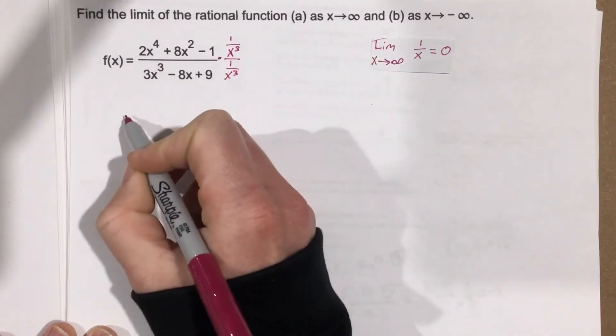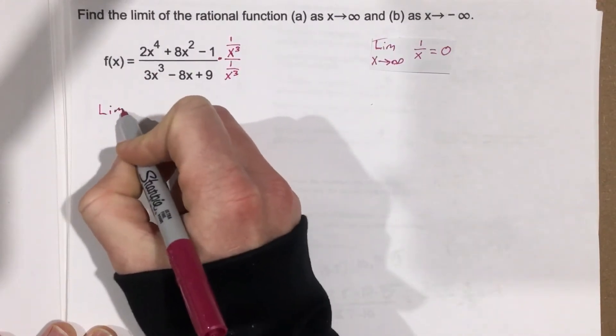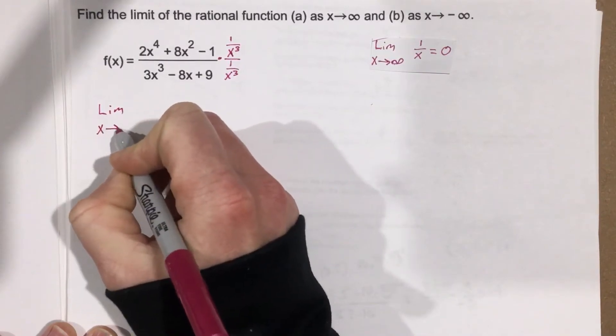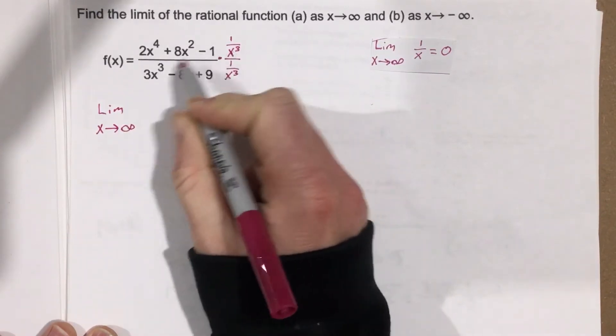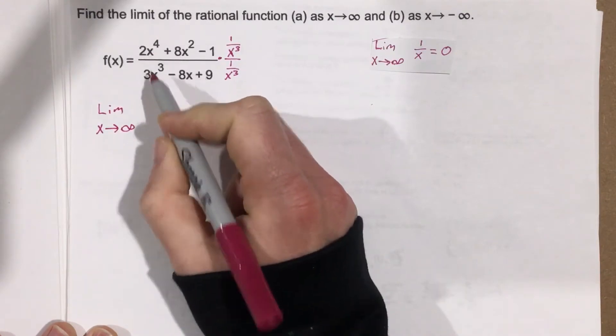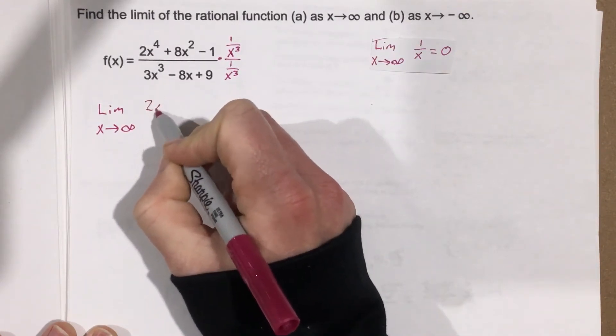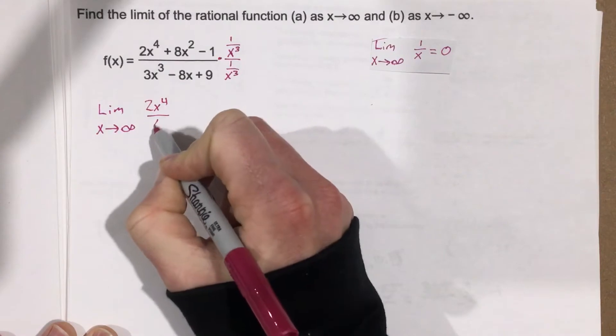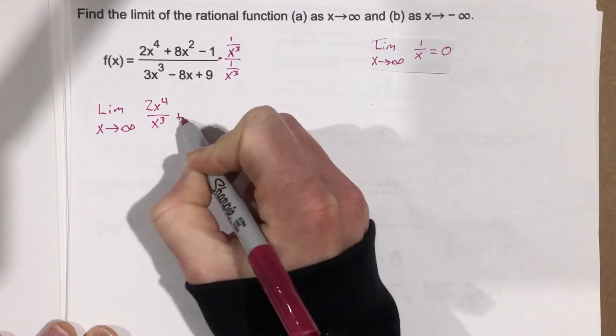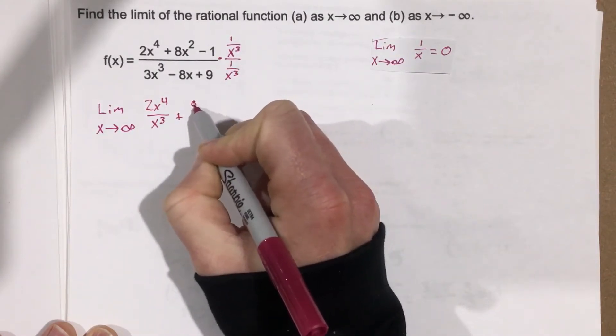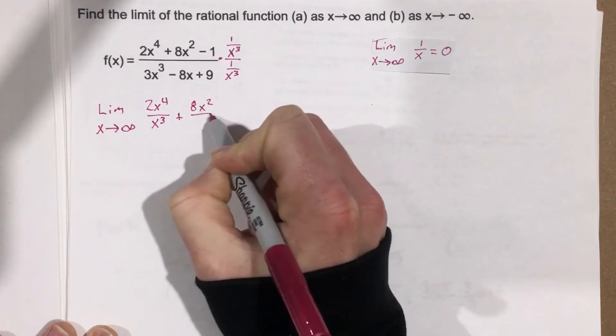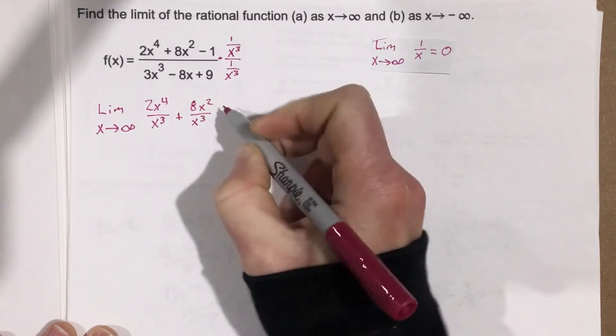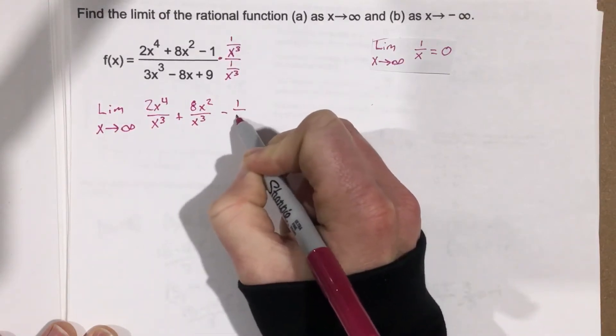And on top I'll end up with limit as x approaches infinity. I'll end up with 2x to the 4th over x cubed, plus 8x squared over x cubed, minus 1 over x cubed,